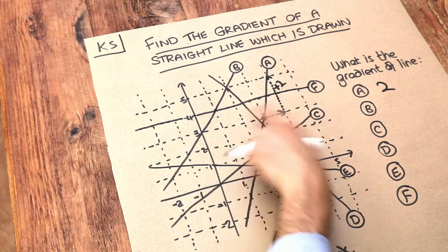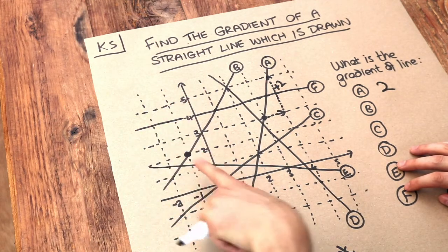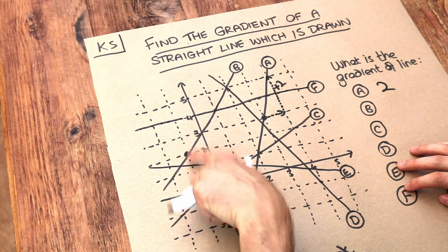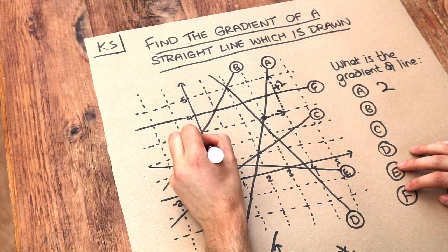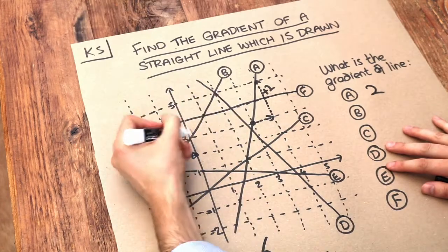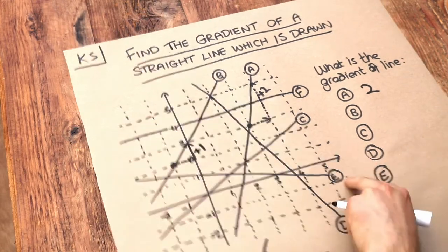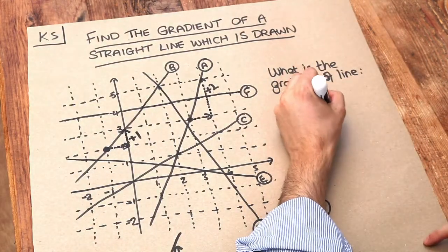What about line B here? Let's start on an integer coordinate where we've got whole numbers, the coordinates here minus one, two. Now each time x increases by one, what is the y value changing by? Well you can see it's going up by one. So therefore the gradient of that line is one.